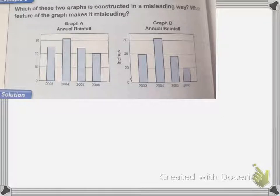All right, this next one, which of these two graphs is constructed in a misleading way? What feature in the graph makes it misleading? So if we look, both of them are bar graphs, and they both are showing the same information.